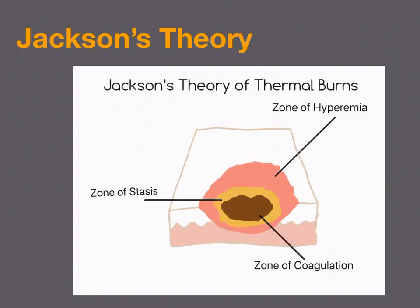The zone of stasis is potentially salvageable depending on how we treat the patient and the burn — if we stop the burning process and prevent burn shock, we may be able to save that tissue. Around that is the zone of hyperemia, which is typically just red and inflamed and should not have decreased blood flow or tissue loss. If the zone of coagulation penetrates through the epidermis down into the dermal or adipose layer, we have a full thickness burn.